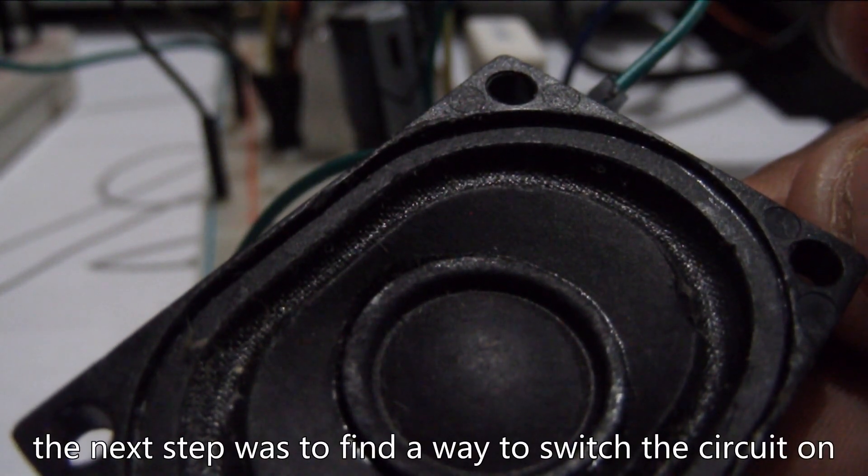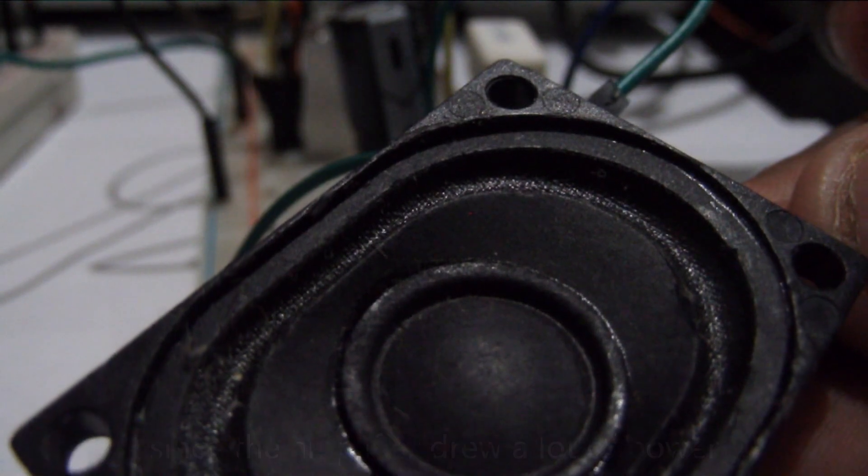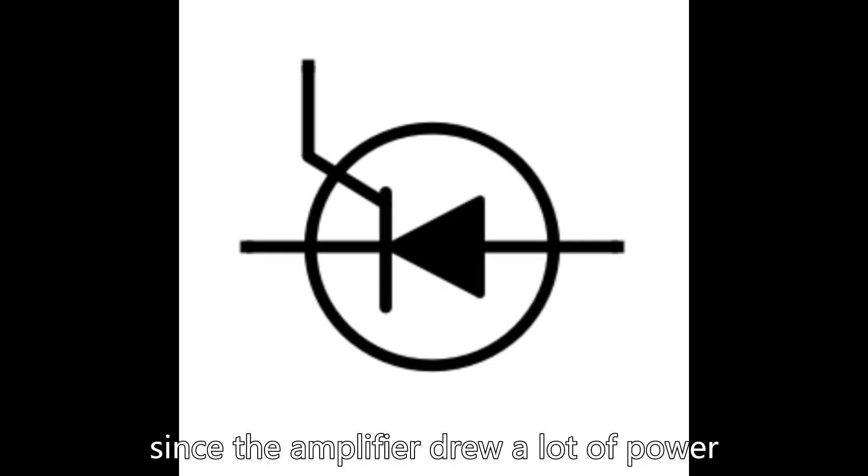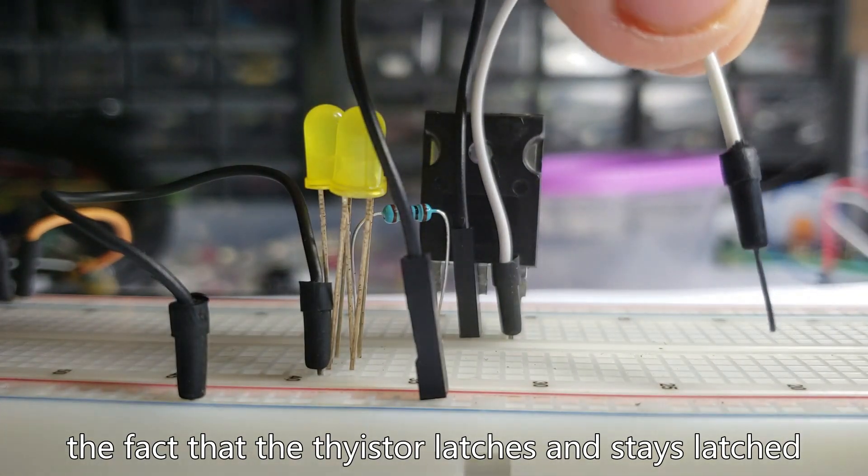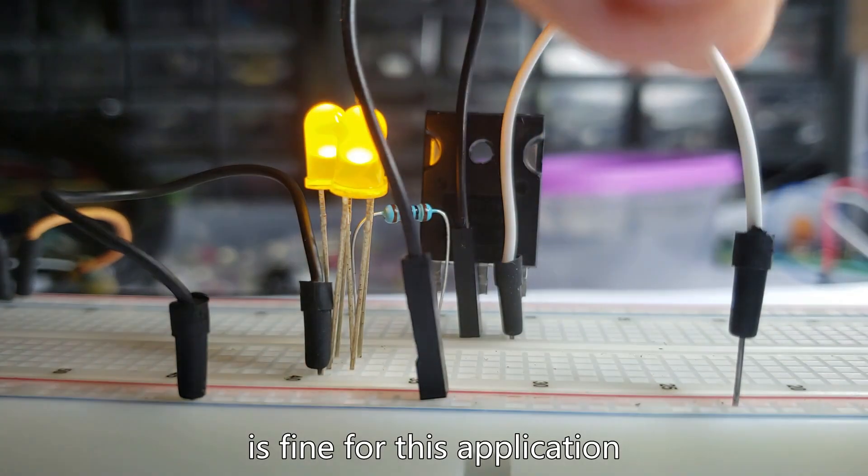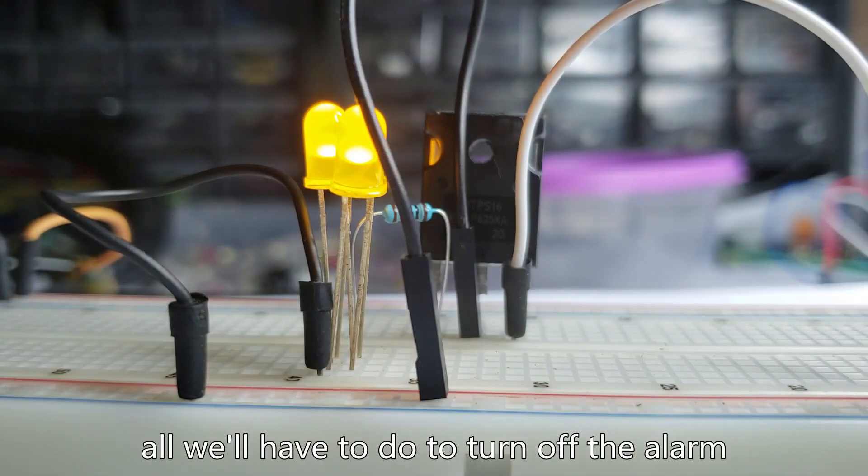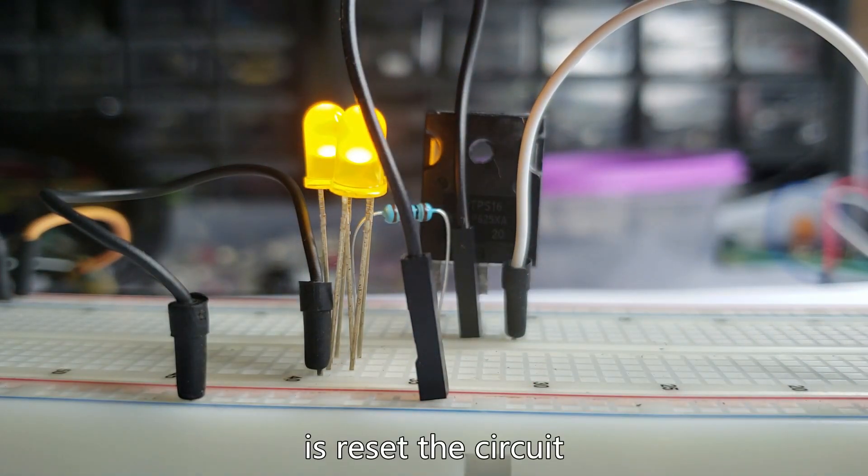The next step was to find a way to switch the circuit on. Since the amplifier drew a lot of power I decided to use a thyristor for this purpose. The fact that the thyristor latches and stays latched is fine for this application. All you'd have to do to turn off the alarm is reset the circuit.